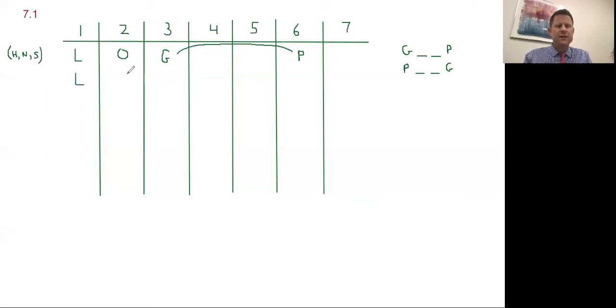And the same thing is going to be true when we move to the next game board. L and O number one and two, G and P four and seven in some order. Once again, we don't know where H, N, and S will go. I'm just going to draw a down arrow there because that applies on the second game board as well.